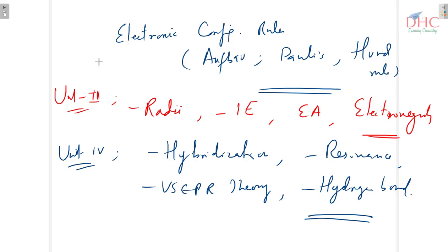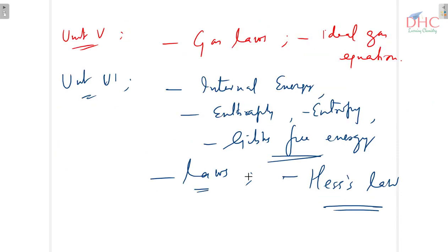Continuing the recap: ionization energy, electron affinity, and electronegativity. In chemical bonding: hybridization, resonance, VSEPR theory, and hydrogen bond. In gaseous state: gas laws — Boyle's law, Charles' law, Avogadro's law — and the ideal gas equation.